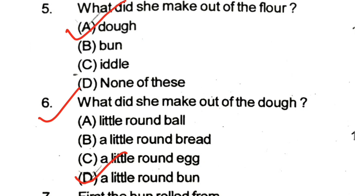Question 7: Where did the bun first roll from? Options: the window, the door, the land, none of these. The answer is: the window.